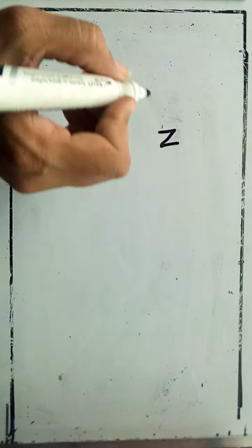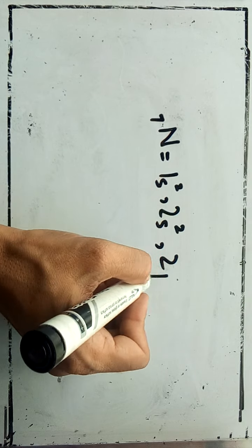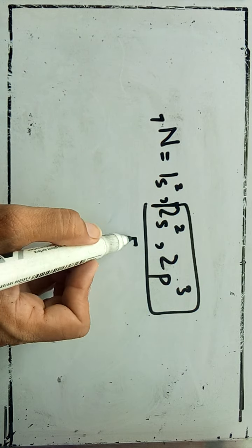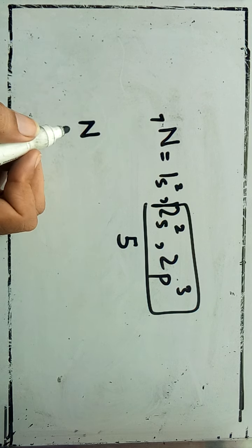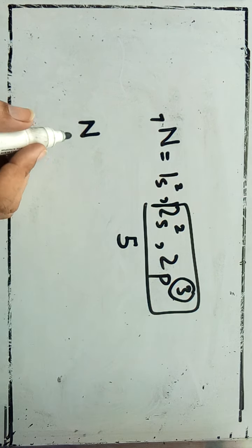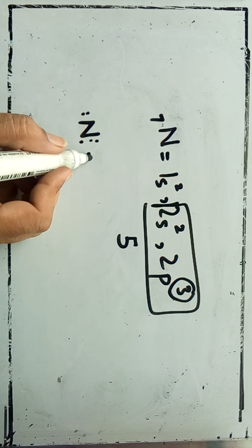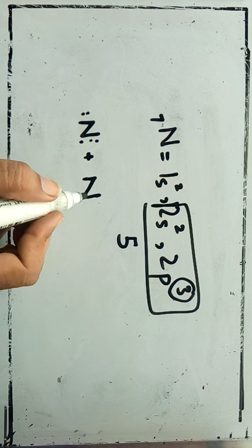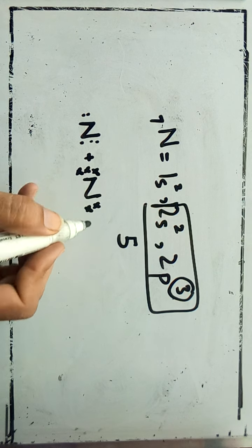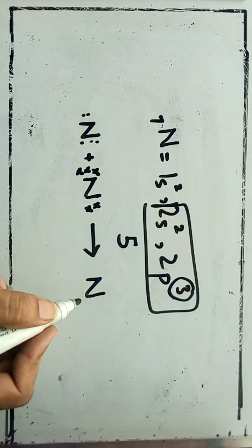The electronic configuration of nitrogen is 1s² 2s² 2p³. The number of valence electrons is five, and nitrogen forms a bond with another nitrogen atom using its three electrons. These two are the lone pairs whereas these three are the bond pairs. It will combine with another nitrogen atom and these electrons are shown by crosses.